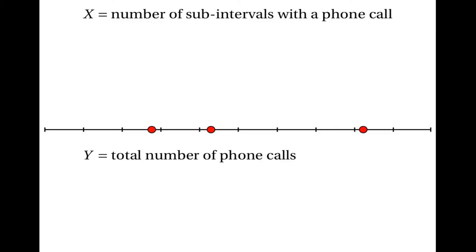And if they're the same, they must have the same distribution. So that means there's a binomial distribution which is very similar to a Poisson distribution. Let's go into this in more detail.